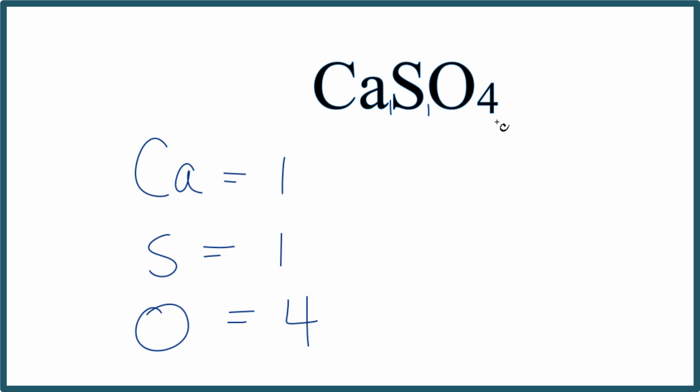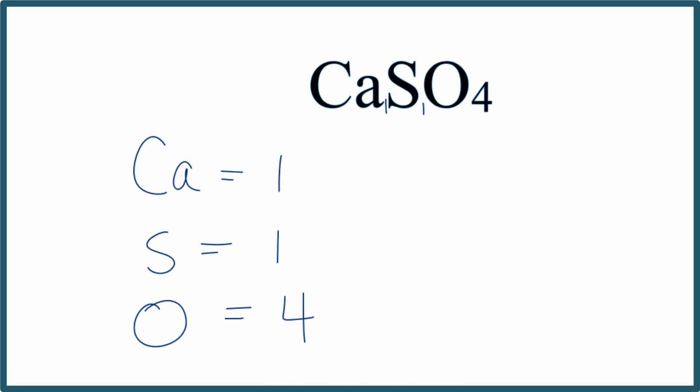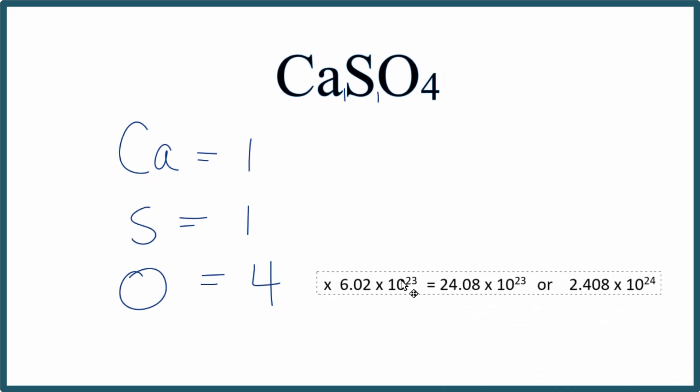If you wanted to know how many atoms of each type were in one mole, one mole of this calcium sulfate, you just multiply these numbers by Avogadro's number. So for example, the oxygen atoms, we could multiply that times Avogadro's number, four times 6.02 times 10 to the 23rd. That tells us how many atoms we have in one mole of calcium sulfate.